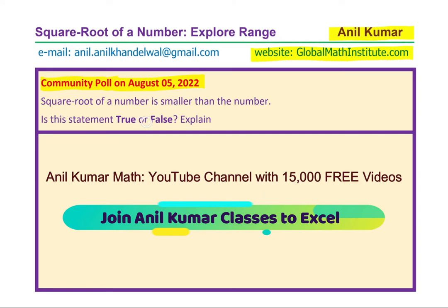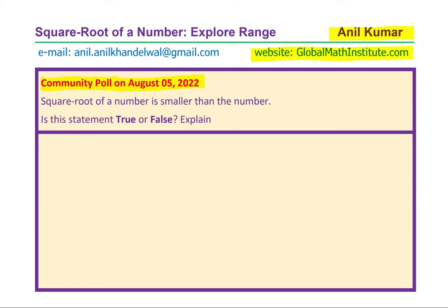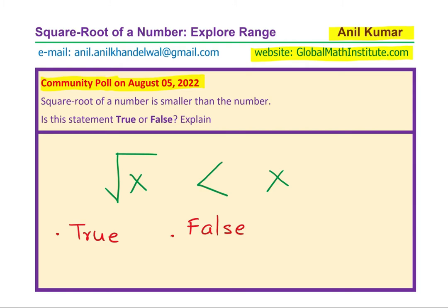Is this statement true or false? The question is: we have square root of a number and we want to say that this is less than x, and we gave you three options — one: true, second: false, and third: need help.